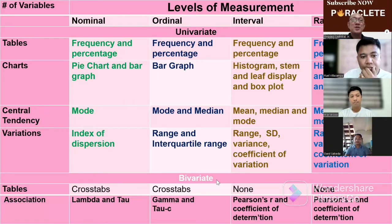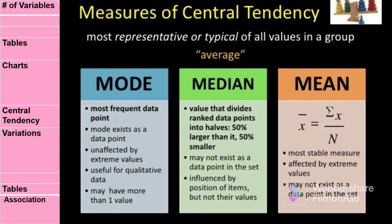If you have nominal data, you can use frequency and percentage and you can also use tables for all types of data. For central tendencies with nominal data, you use the mode. Also, for your ordinal data, you can use mode and median.